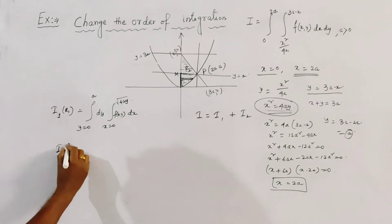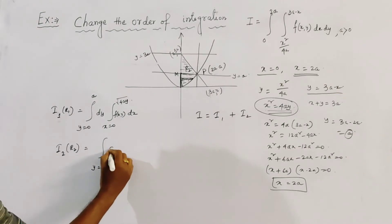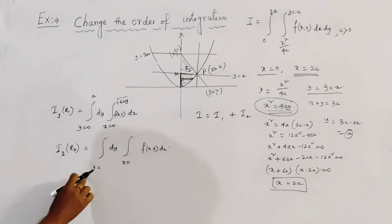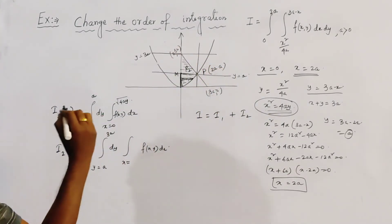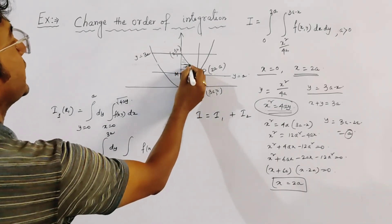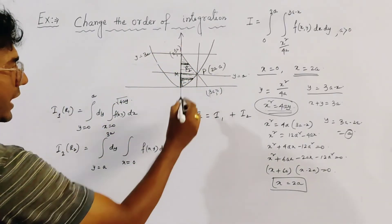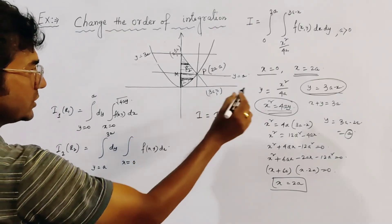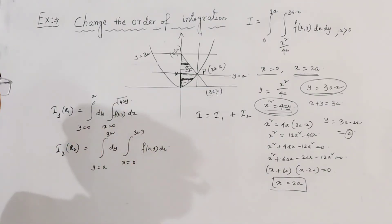The second integration is I2. Similarly, we write dy then f(x,y) dx. The range of y for I2 is from y equal to a to y equal to 3a. Drawing a strip parallel to the x-axis, it starts from x equal to 0 (the y-axis) and ends on the straight line, giving x equal to 3a minus y. We then add I1 and I2 to get the full integral I. This completes the change of order of integration.